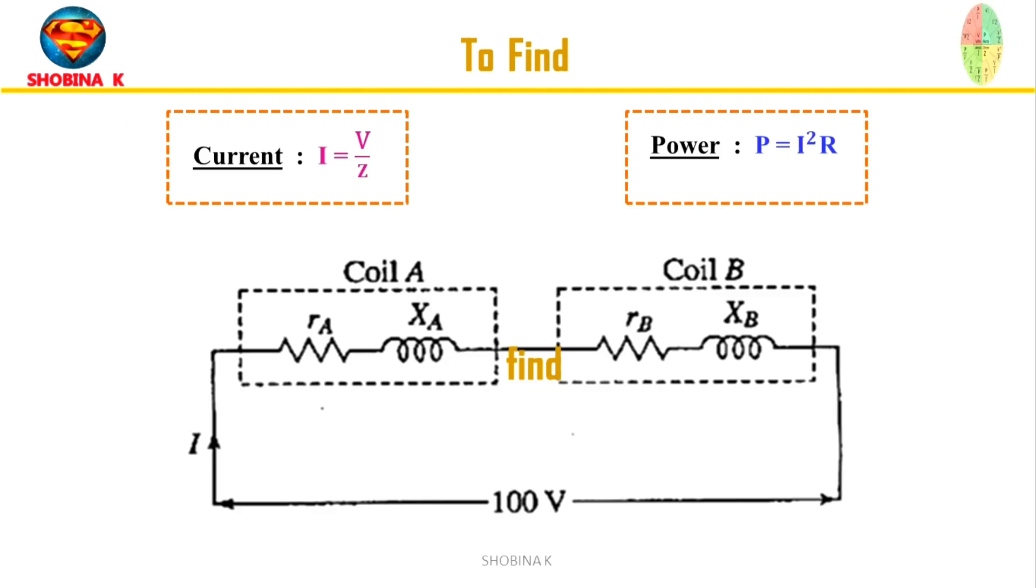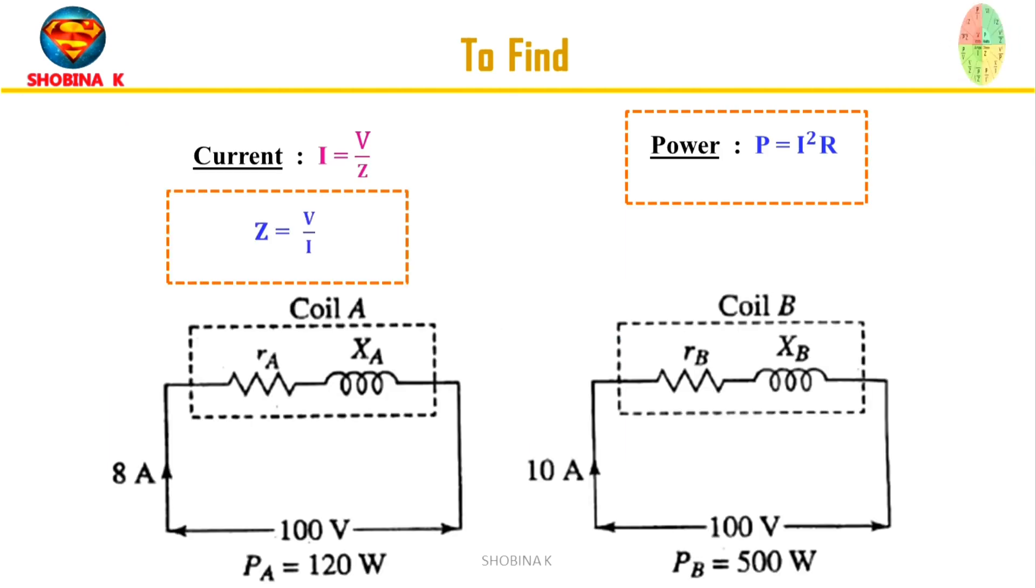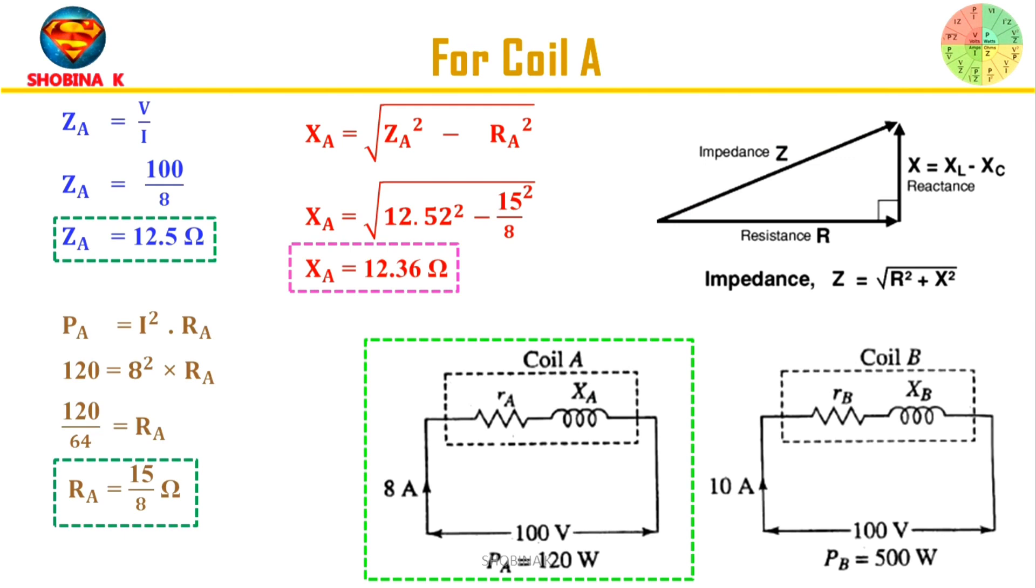First, we will find the impedance. To find the impedance, we rewrite the formula in terms of voltage and current, because the current and voltage is given. Now let's find for coil A, and now we substitute the value of voltage and current. We get the impedance value as 12.5Ω.